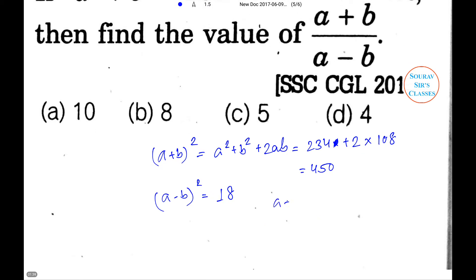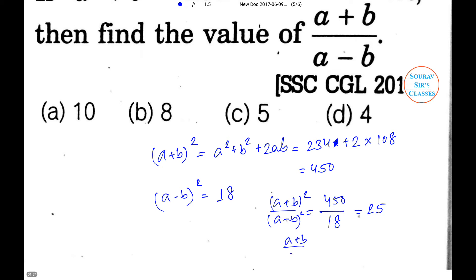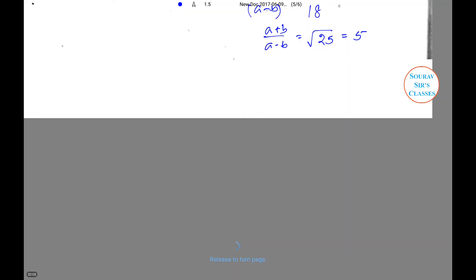So (A+B)² / (A−B)² = 450/18 = 25, therefore (A+B)/(A−B) = √25 = 5.